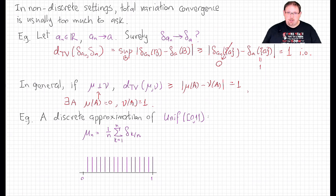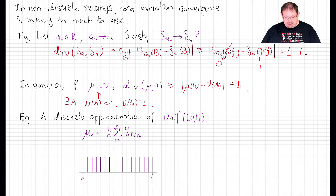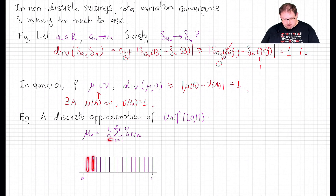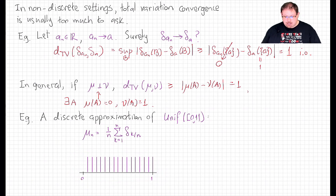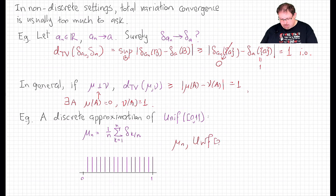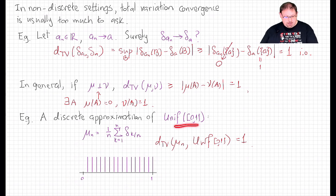That fact rules out the following kind of discrete approximation we'd really like to use. Take the uniform distribution on the unit interval. Here is a natural discrete approximation: a bar graph with point masses each of mass 1/n at the points 1/n, 2/n, 3/n, all the way up to n/n. You would hope this is a good approximation of the uniform distribution, but because this is a discrete measure, it's mutually singular from it. This one gives total mass to a finite set of points, and the uniform measure gives mass 0 to any finite set of points. So mu_n and the uniform distribution have total variation distance equal to 1 — a maximally bad approximation.